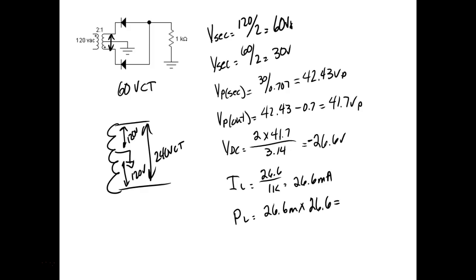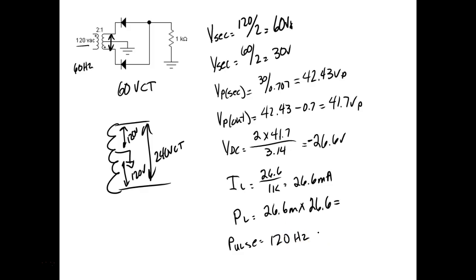Output pulse frequency on this guy would be 120. So the pulse frequency — this is full wave. So the output pulse frequency — if the input is 60, then the pulse frequency would be 120 hertz. If it's full wave, it's twice the input frequency. If it's half wave, it's 60. I need to put that on the worksheet.